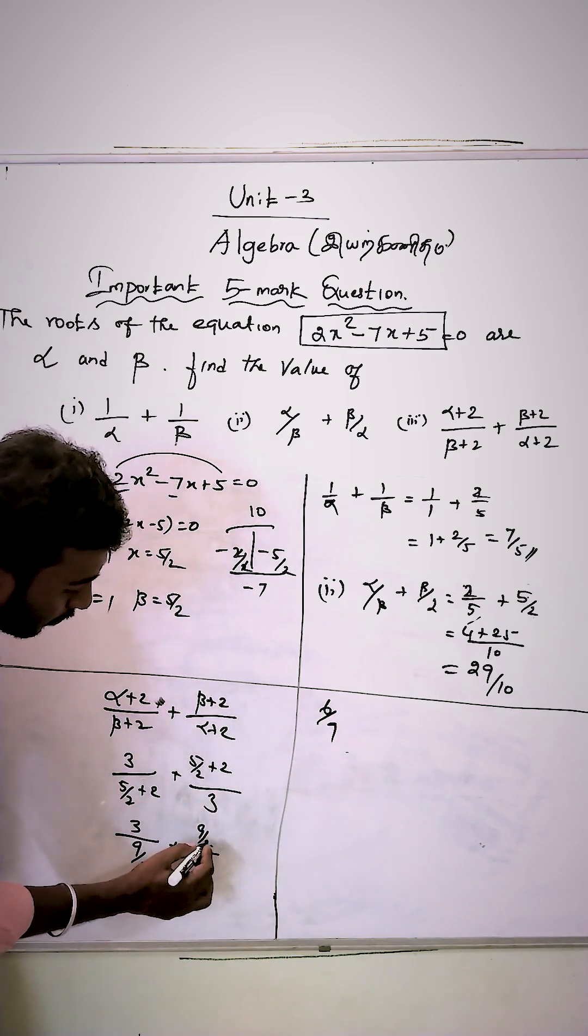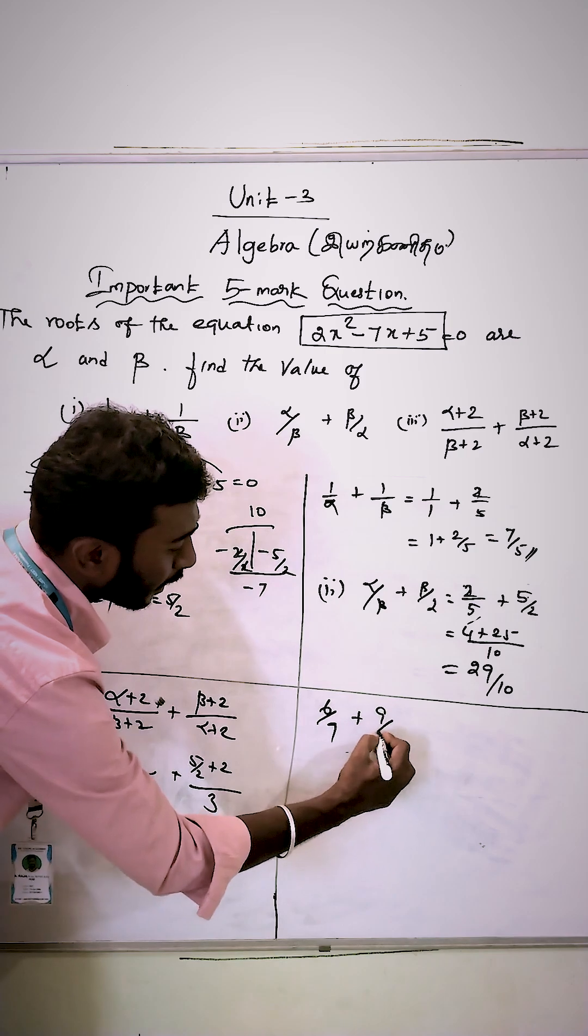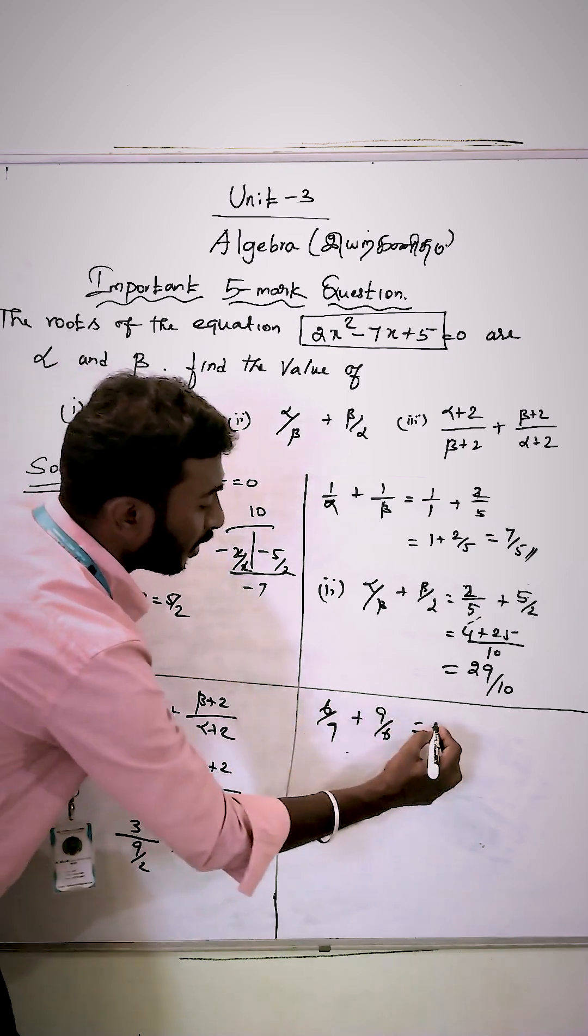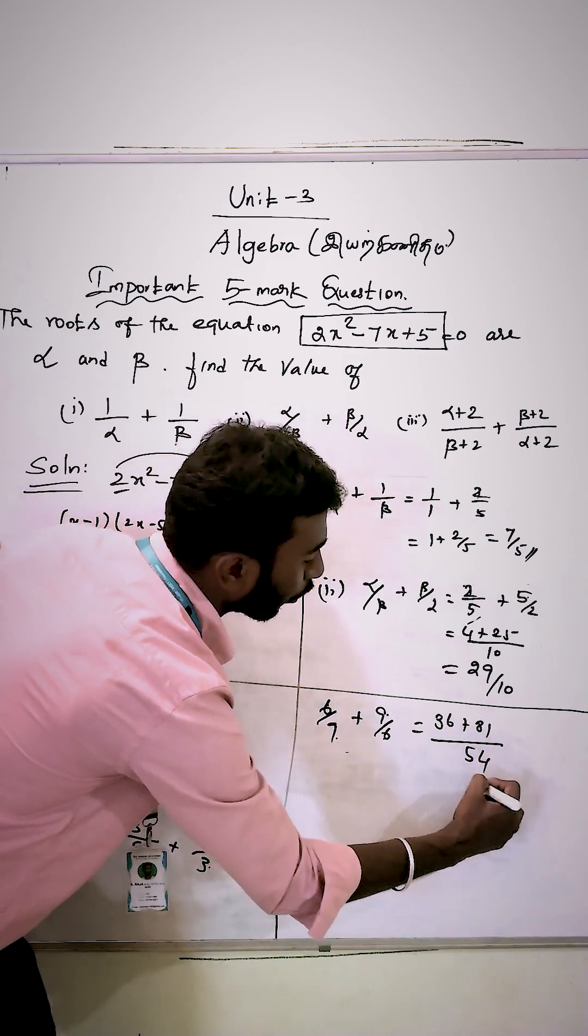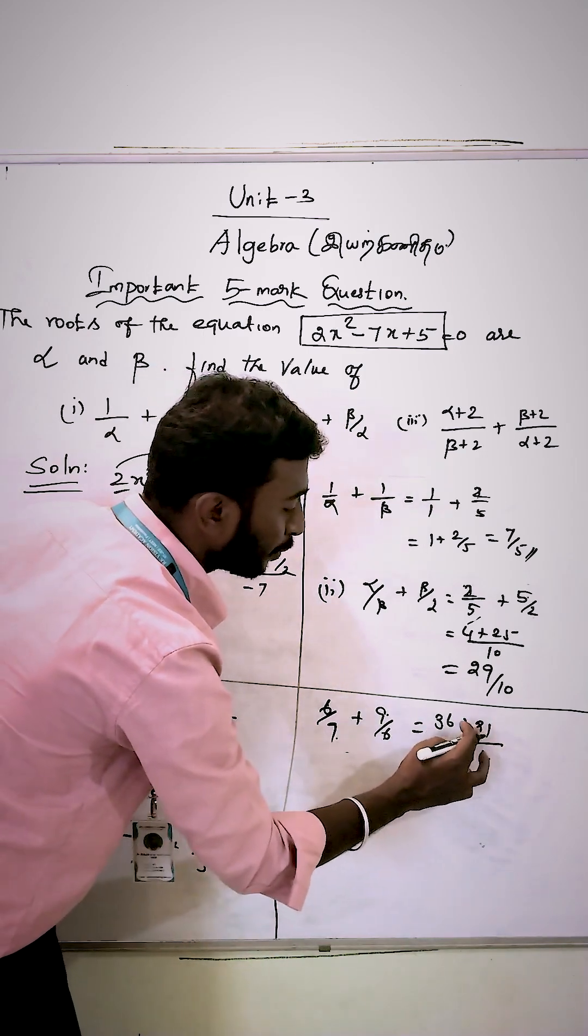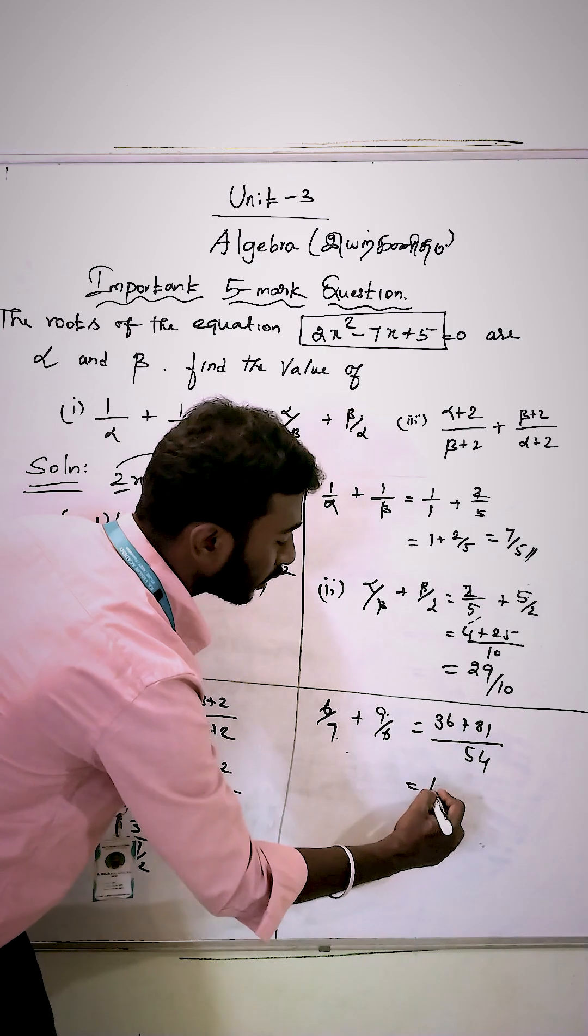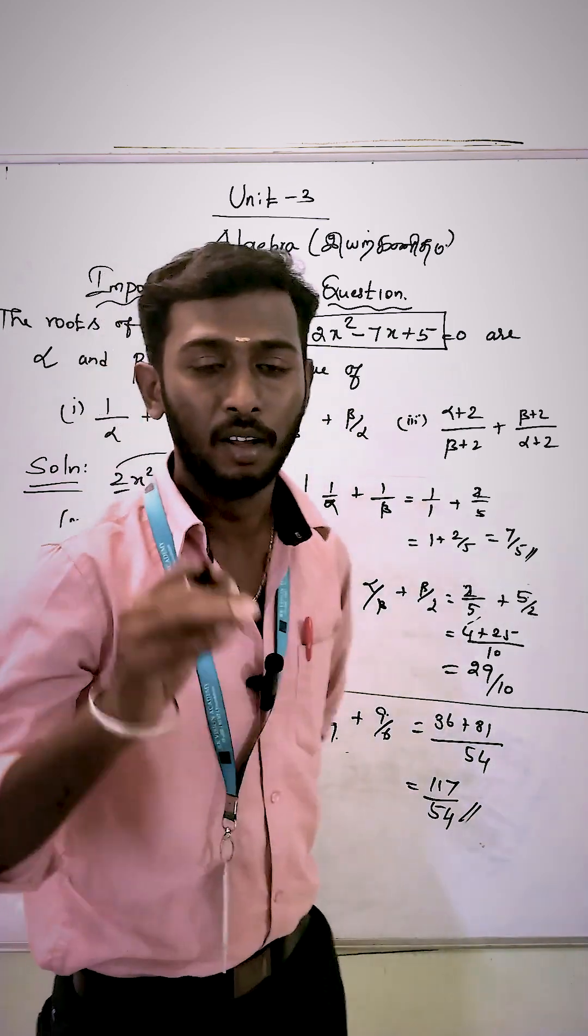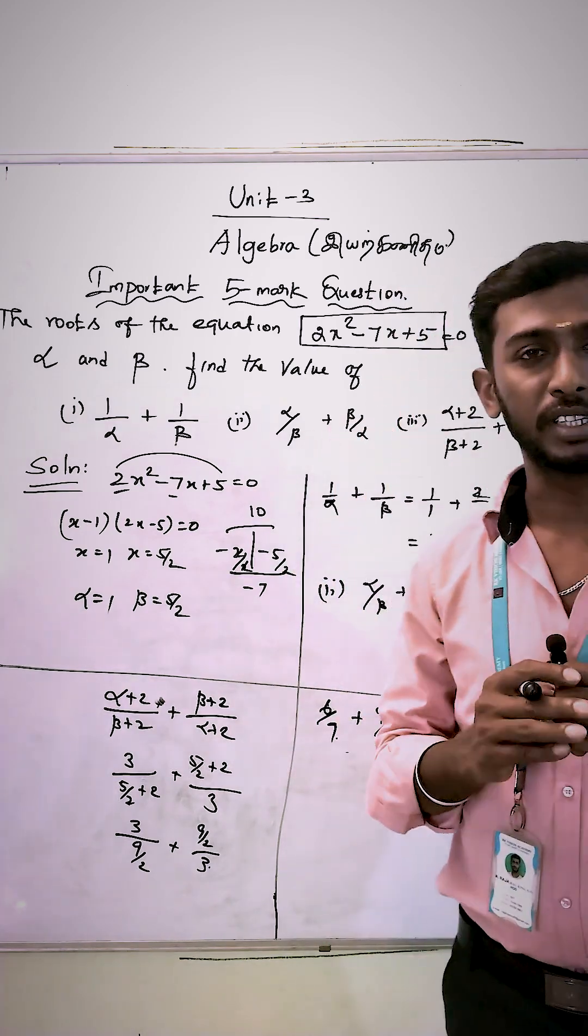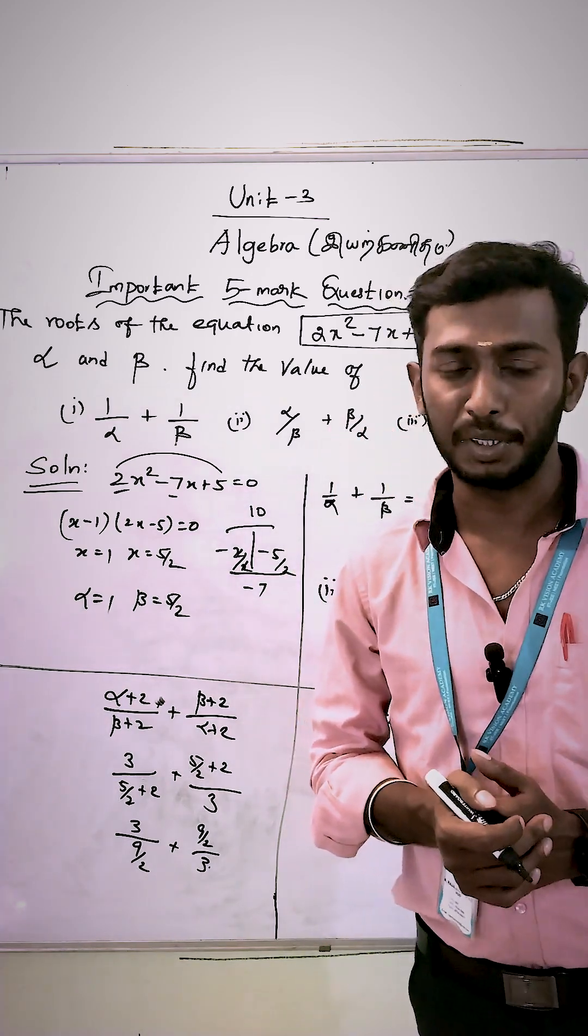This gives us 6 by 9 plus 9 by 6, which equals 36 plus 81 divided by 54, giving us 117 divided by 54. That is the third answer. This is the most important question. If you have any doubts, please ask.